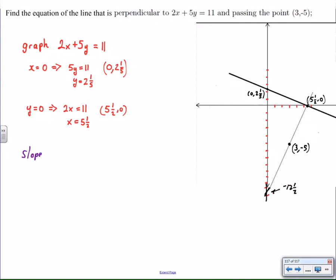Now comes the actual nuts and bolts work. I need to find the slope of the given line. Change in y over change in x. The slope of the given line is easily found since we have our intercepts. We go down 2 and 1/5 and over 5 and 1/2.